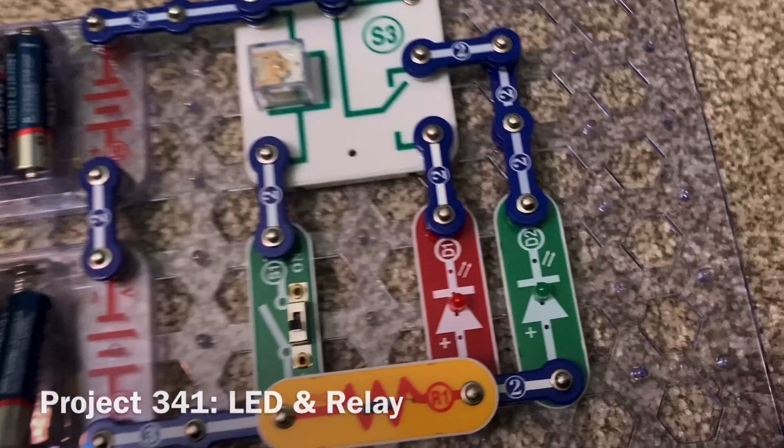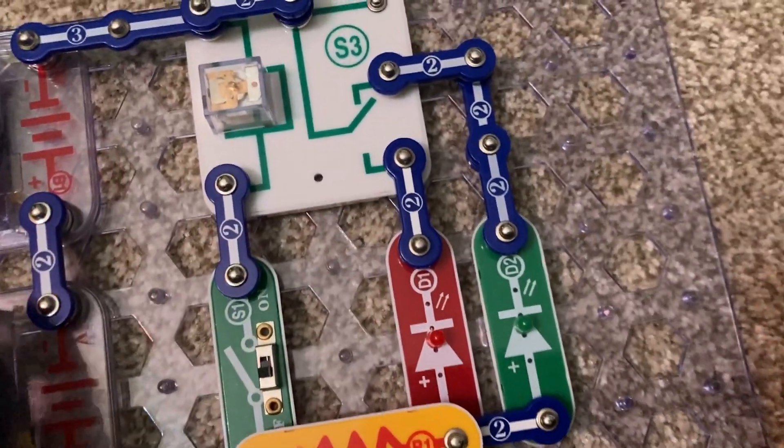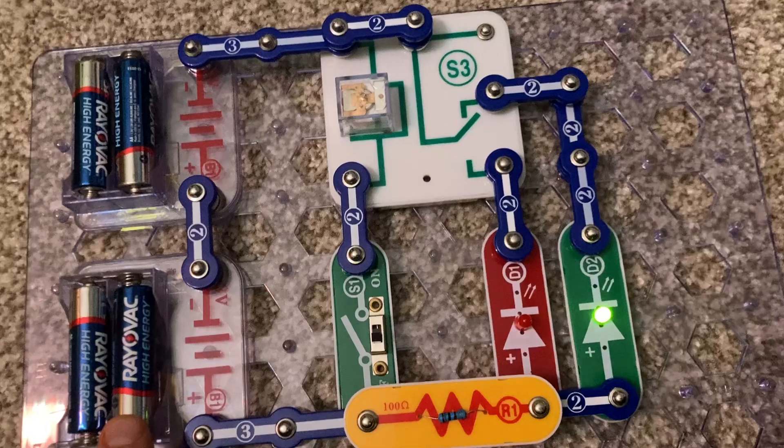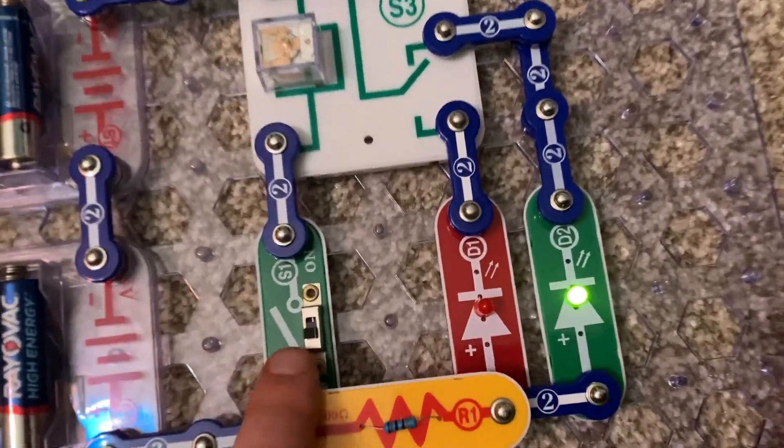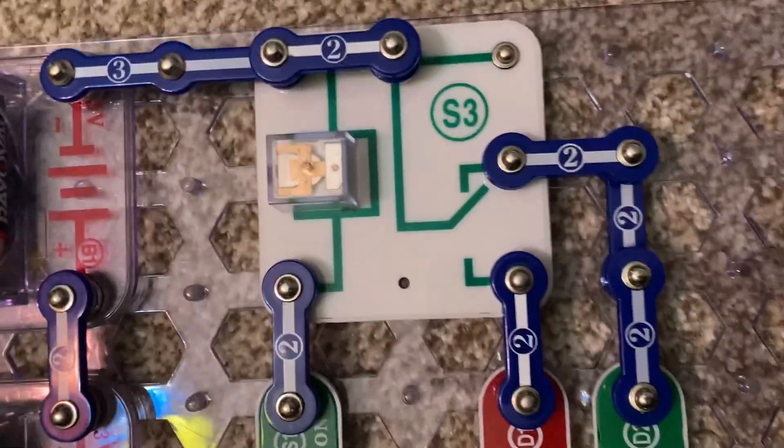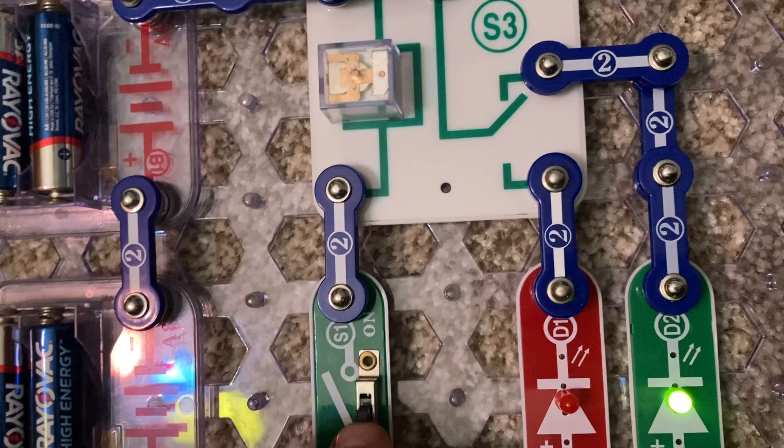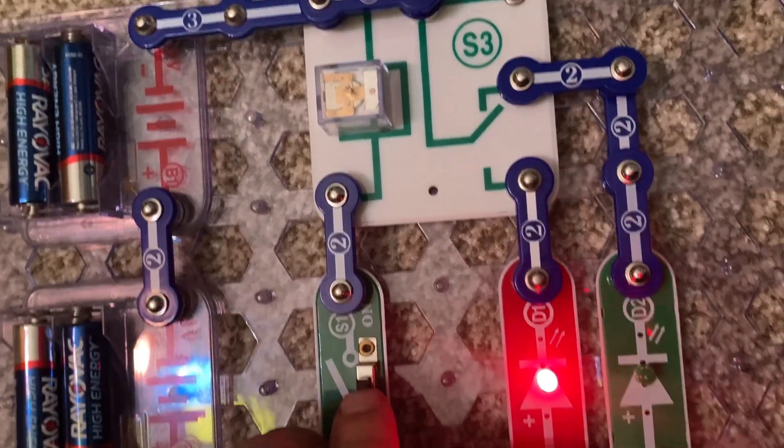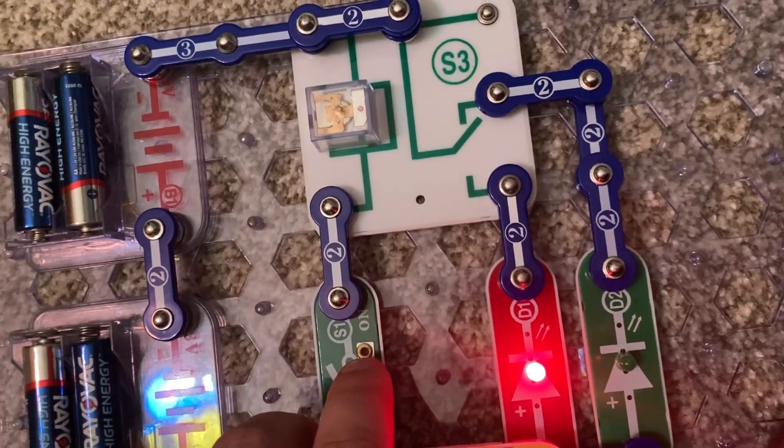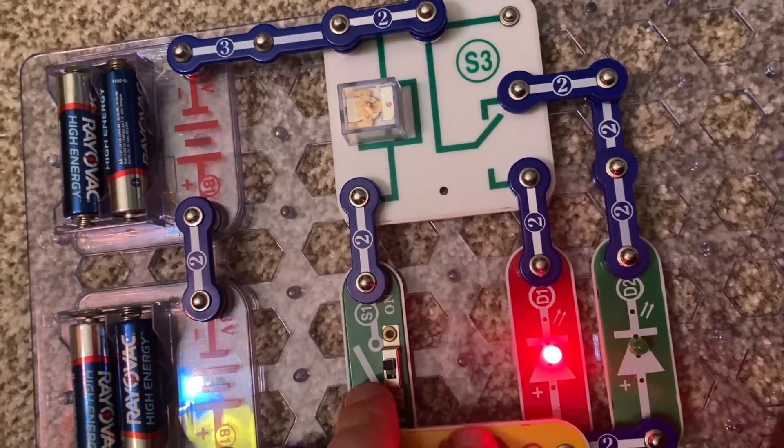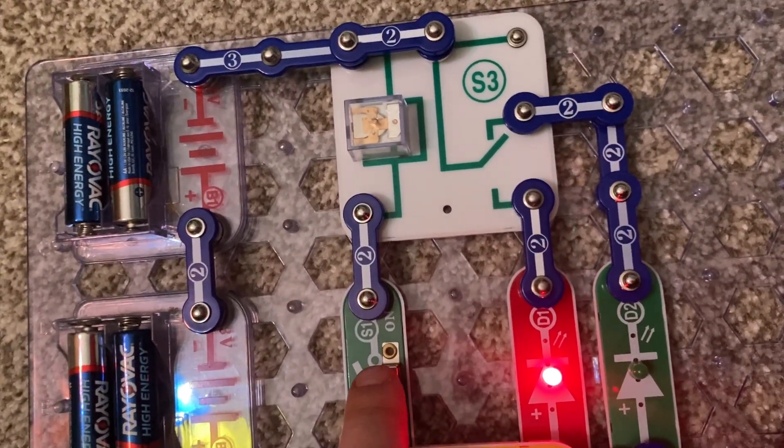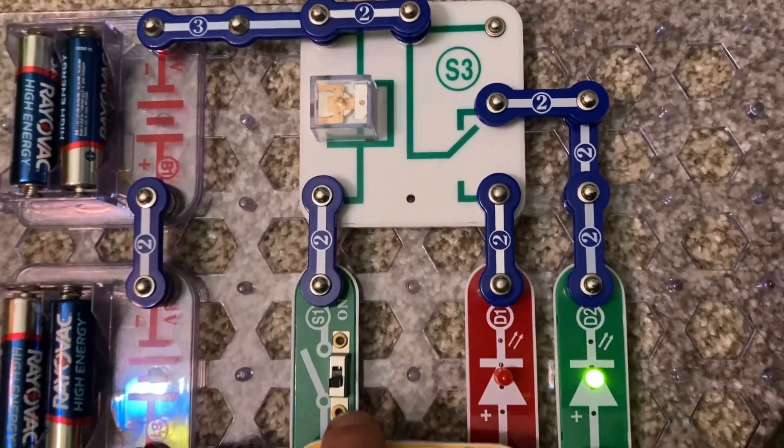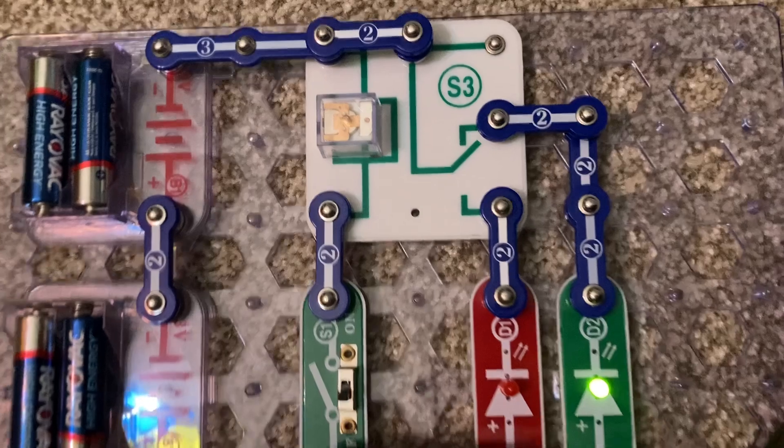Here you have another project involving the relay. And when I put all the batteries in and the slide switch is off, the green LED is on. But when I turn the slide switch on, listen and watch carefully. The relay clicks and the green LED turns off, but the red LED comes on. When I turn the slide switch off, the red LED turns off and the green LED comes back on.